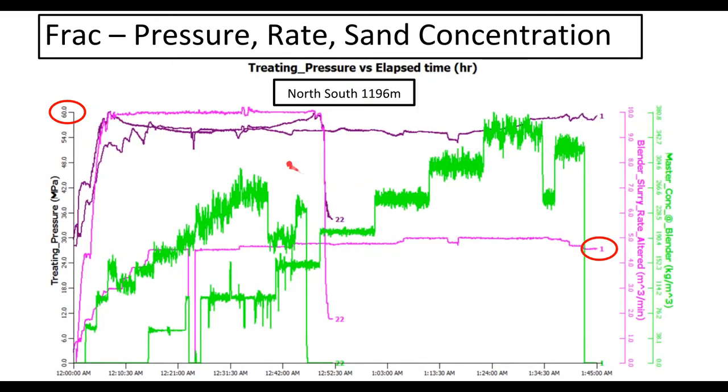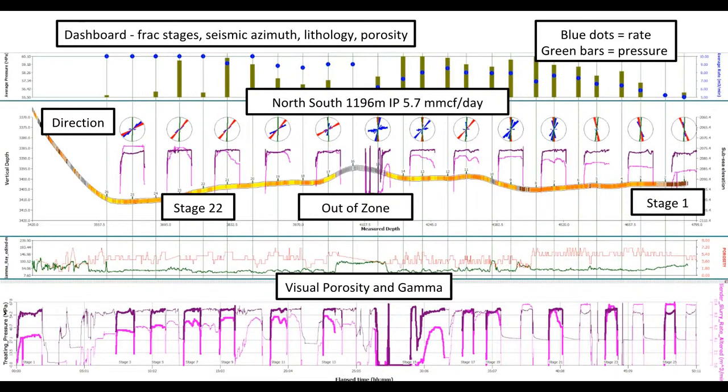The stage where things become more or less normal is stage 22. We get this beautiful signature, the pressure goes up, and then the pressure drops down, and then it increases up at the end. We're able to get our blender slurry rate up to 10 cubes a minute, and then everything falls off at the end of the stage 22. So 22 is the way ideally all frac stages should perform. My estimation is a lot of the reserves that are coming out are only coming out of these few stages with this signature.